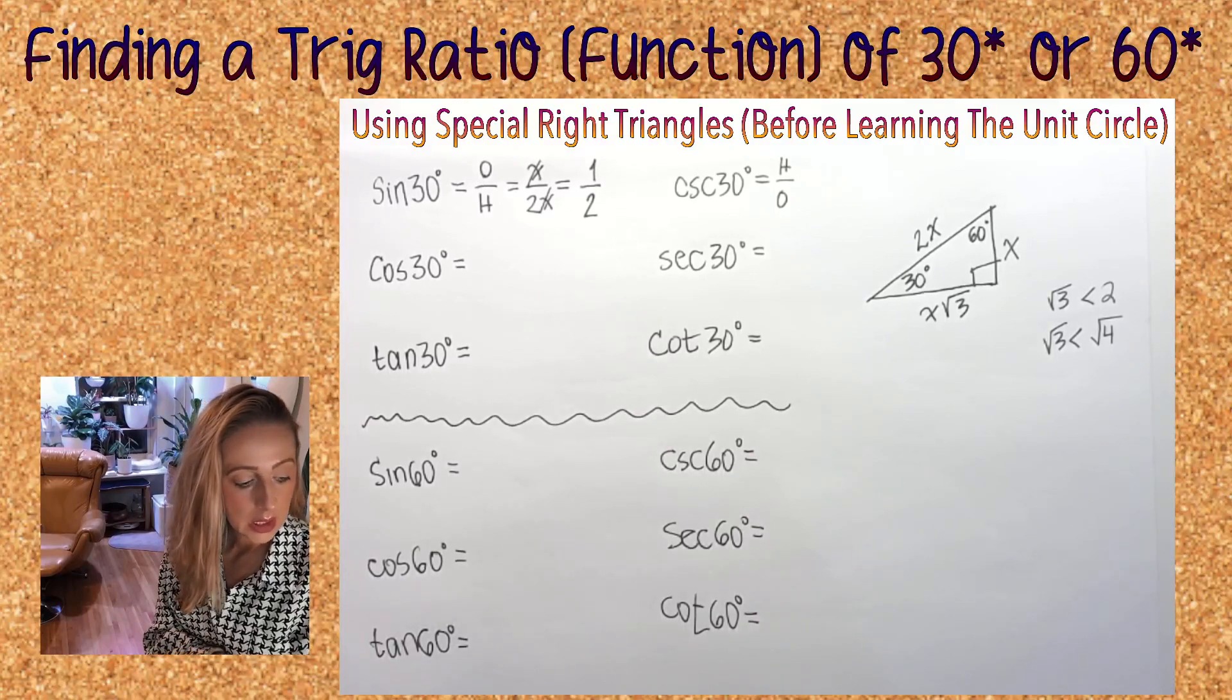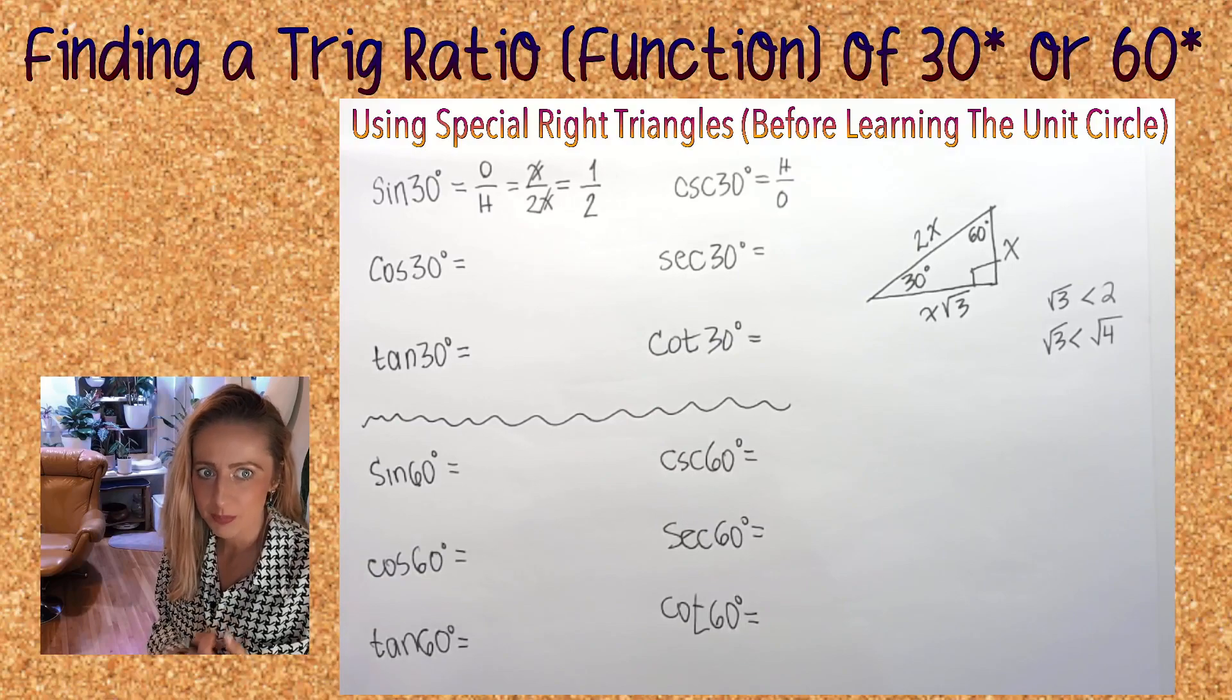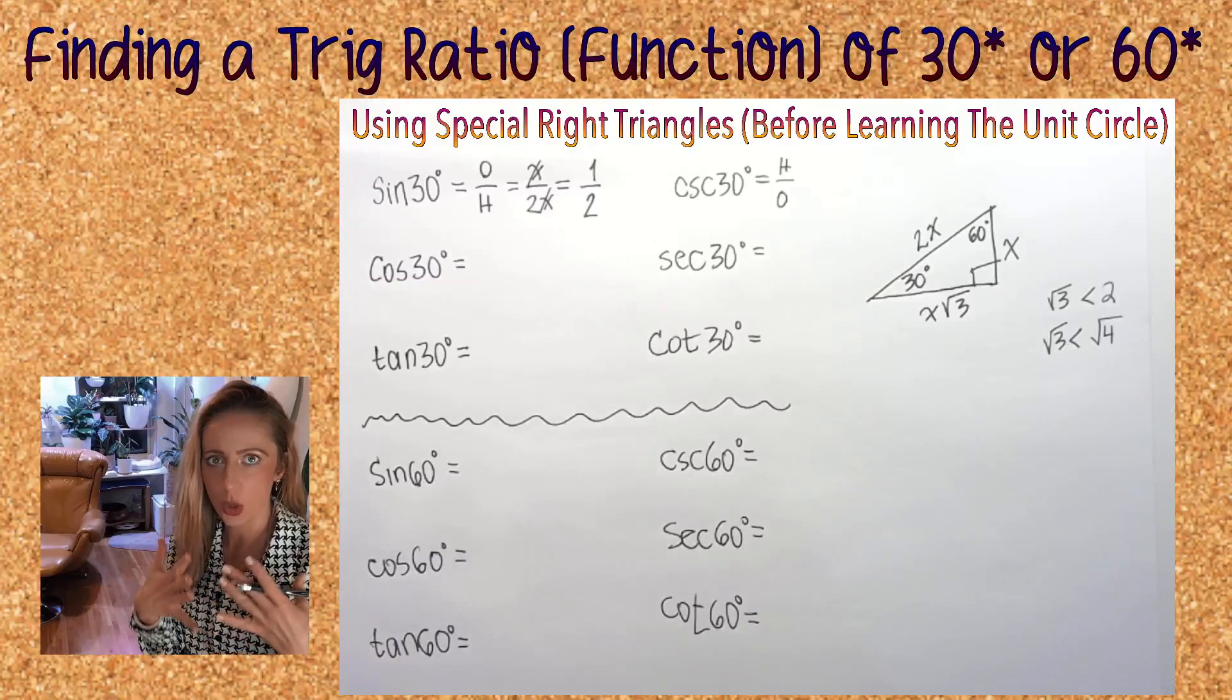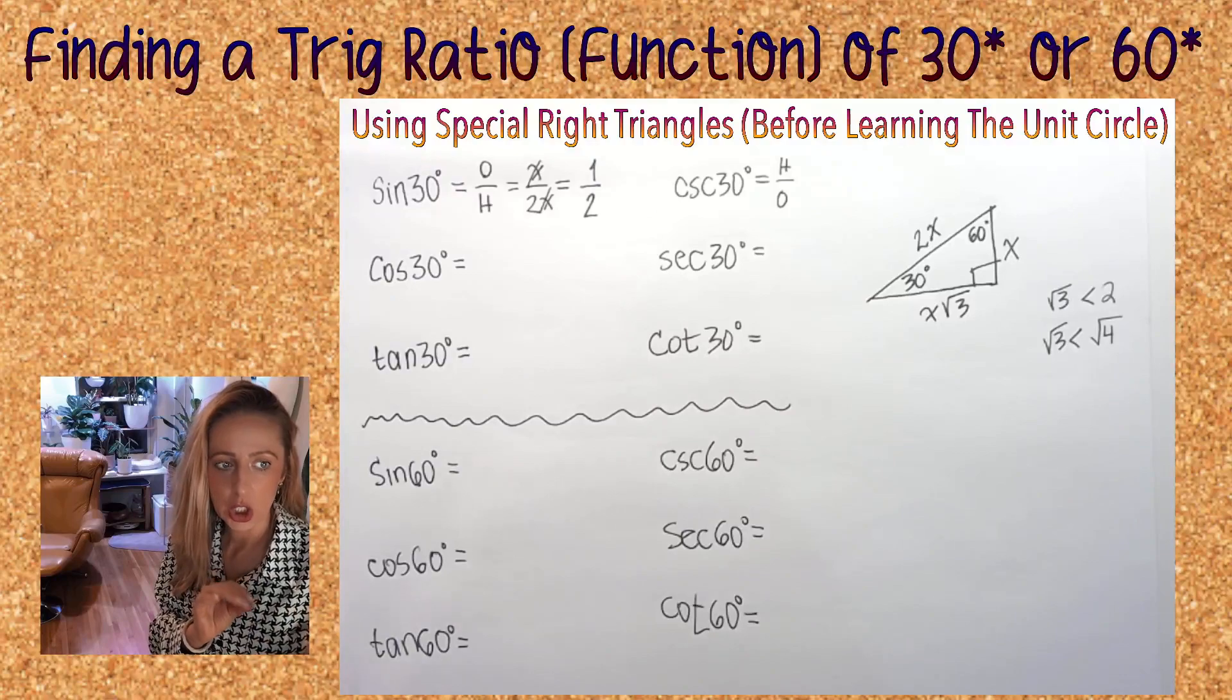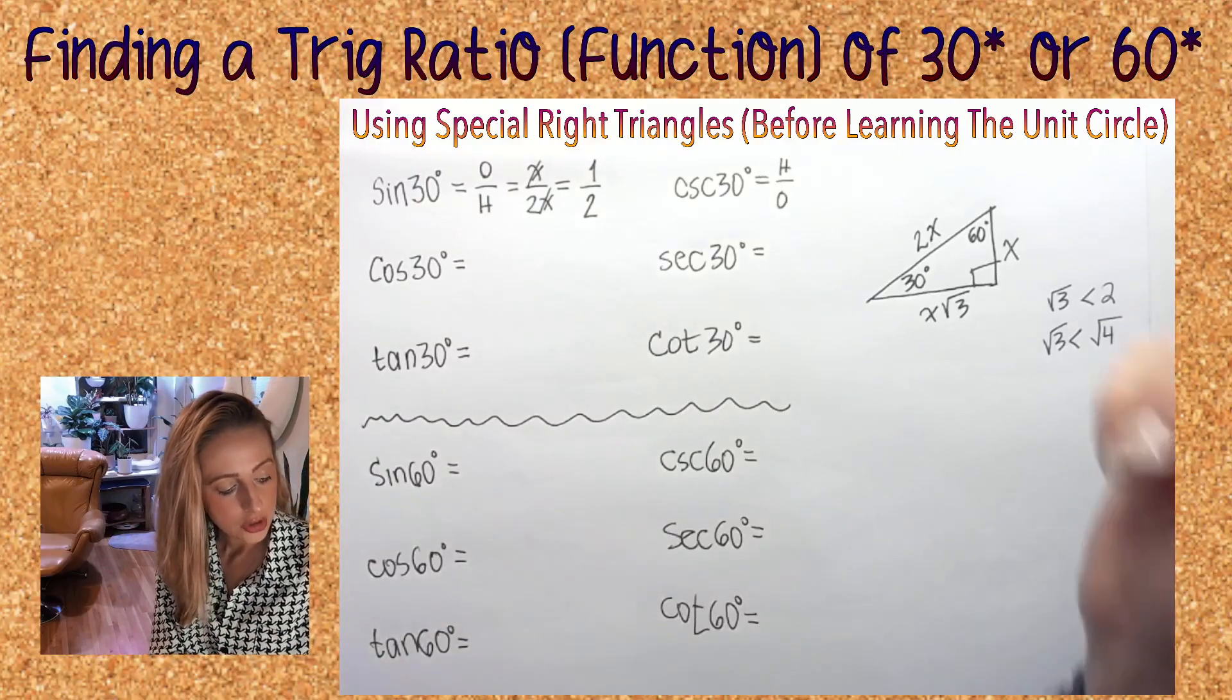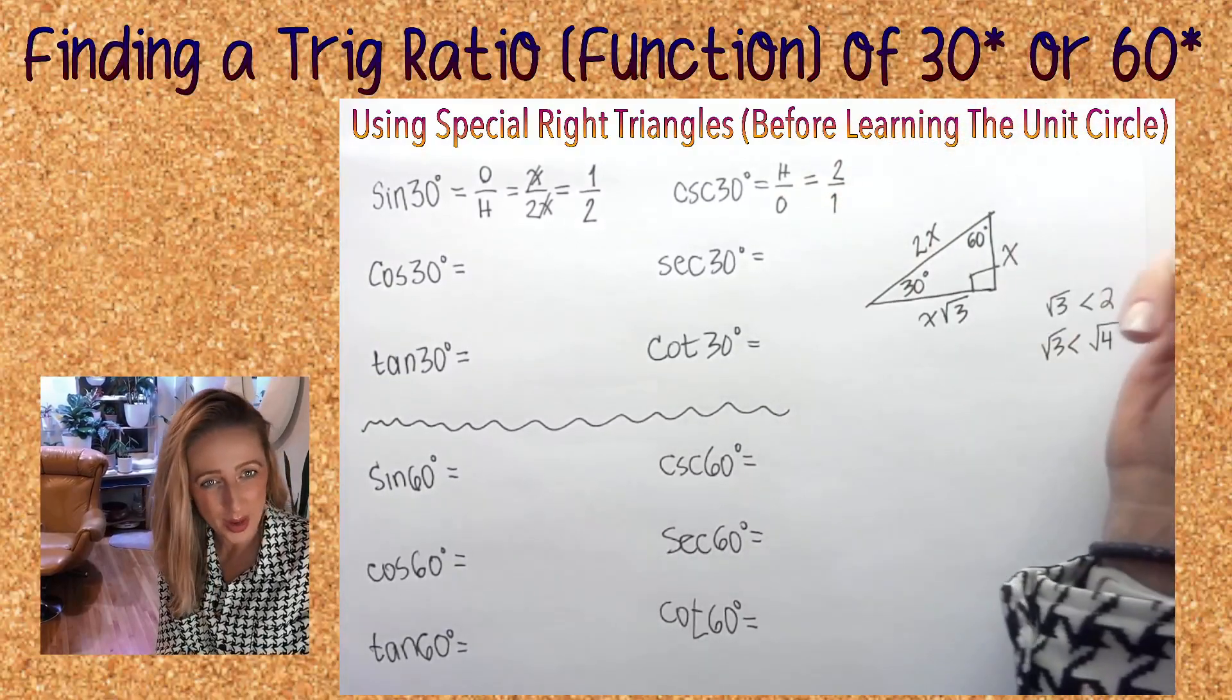Sine and cosine, since hypotenuse is in the denominator and it's the biggest side, your answer for sine and cosine should always be less than one. Similarly, your answers for secant and cosecant should always be greater than one, unless the hypotenuse equals one, but that's for the unit circle. So then this is 2 over 1, or just 2.